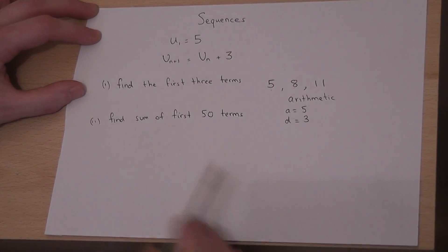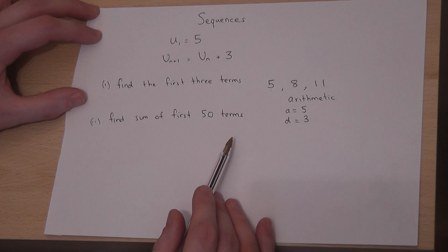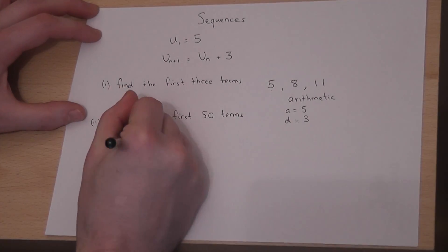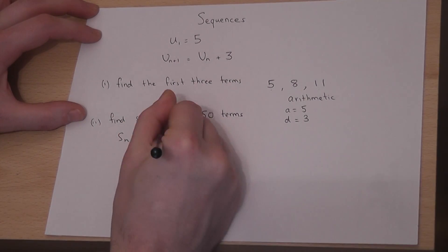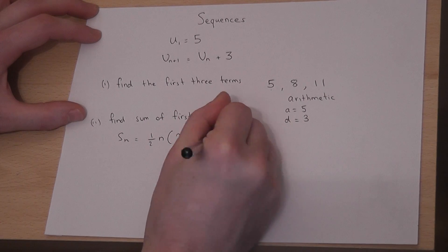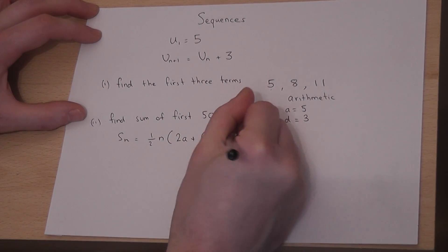So if we're asked to find the sum of the first 50 terms, we can use the general formula, which is the sum of the first n terms is a half n times 2a plus n minus 1 times d.